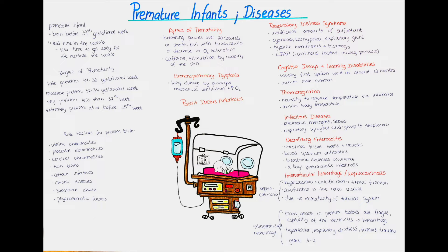Now let's talk about some possible complications. Not all preterm babies will have complications, and what kind of complications and to what degree they present is very individual. I will mention some important and clinically significant ones. Being born preterm is quite common — as many as 1 in 10 babies in the US are born preterm. When the baby is born, just as with normal term babies, we use the APGAR method to estimate how well the baby is adapting to the outside environment.